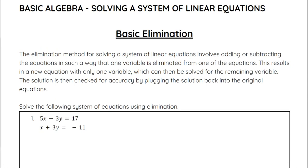The elimination method for solving a system of linear equations involves adding or subtracting the equations in a way such that one variable is eliminated from one of the equations. This results in a new equation with only one variable left, which can then be solved for that variable, and then we can plug it back in just like we did in the substitution method.